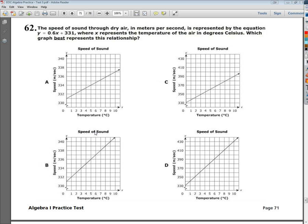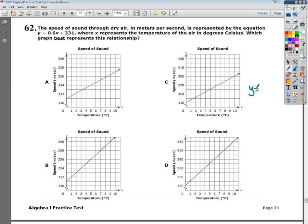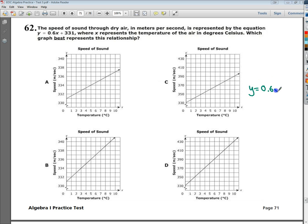I'm going to look at the equation first. And to give myself some perspective, I'm going to convert this 0.6 into a fraction. It's 6 tenths. Basically, it's saying that the speed starts out at 331, and the temperature increases from there. So the reality here is I need to pay very close attention to things like scale.